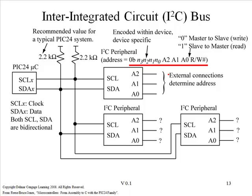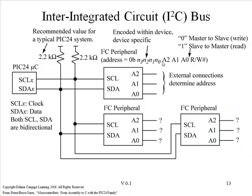The top four bits are determined based on the type of device. For example, a serial EEPROM will always have the pattern 1010. The next three bits, labeled A2, A1, and A0, are determined based on the connection of the A2, A1, and A0 pins, which appear on many I2C devices. Finally, the last bit — the read/write bit — will be 1 (true) on a read transaction, and 0 (false) on a write transaction.